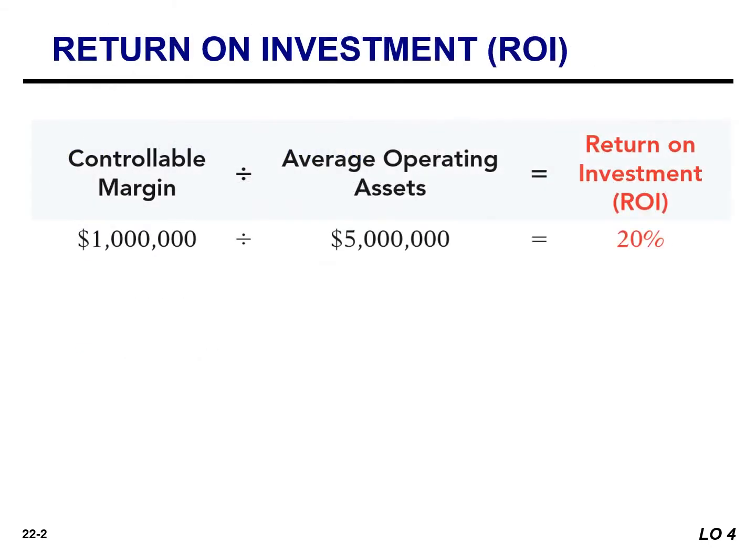The formula for calculating ROI for an investment center is controllable margin divided by average operating assets. If margin is $1 million and operating assets are $5 million, then your ROI is 20%.